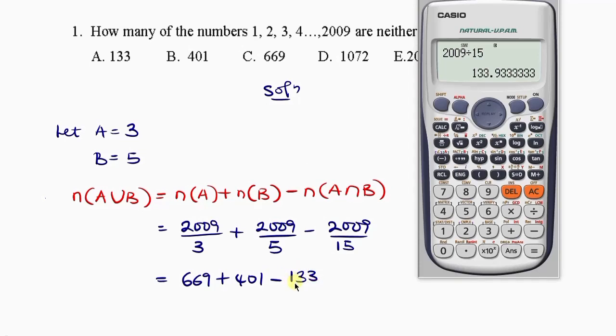Now all we're going to do is press 669 plus 401 minus 133. What do we have? So this gives us a result of 937.